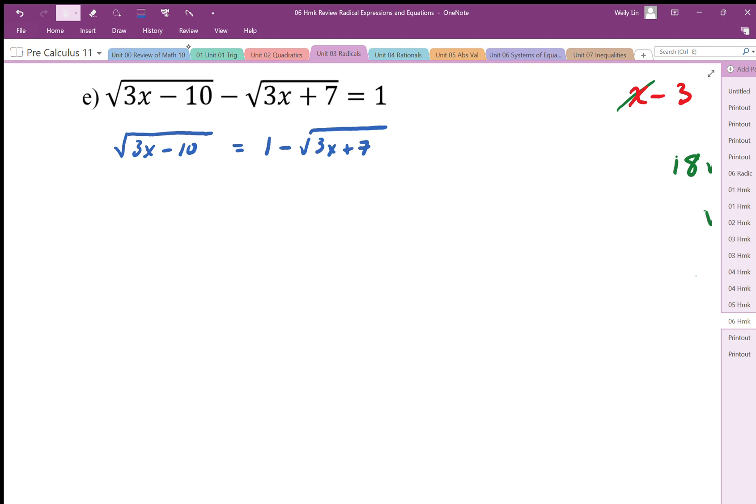So we're going to undo this square root with a square. And we're going to square this. And again, be careful when you're squaring the right hand side because we cannot square those two parts individually. Since there's a minus in there, we have to multiply this out, which means FOIL.